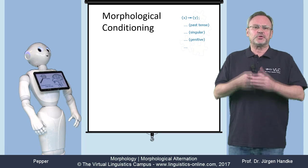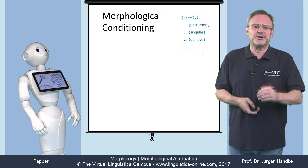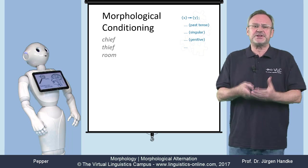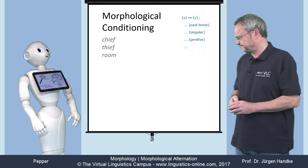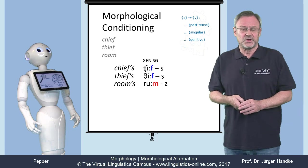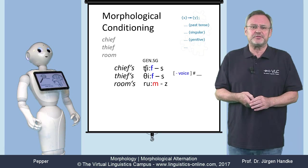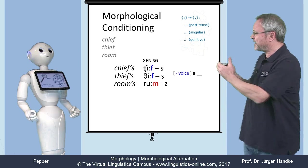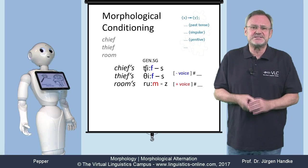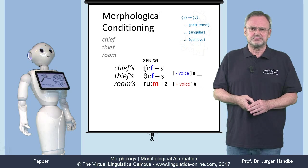Take the words chief, thief, and room in present-day English and generate the genitive case. Yes, it's chief's, thief's, and room's. Okay, good. So, in the first two cases, we have a voiceless labiodental fricative at the end of the base form, and not surprisingly, we take the voiceless allomorph. Room, by contrast, ends in a voiced bilabial nasal, so we add the voiced allomorph. No problem.